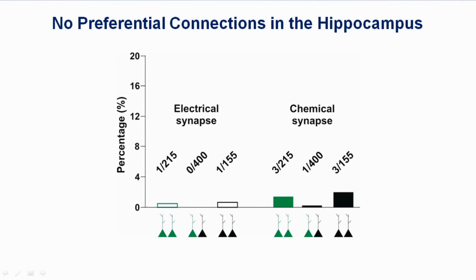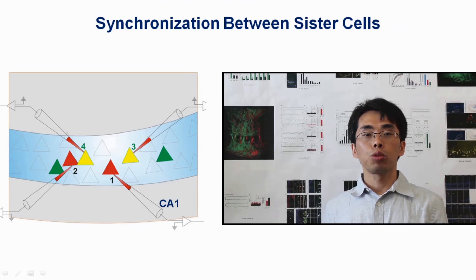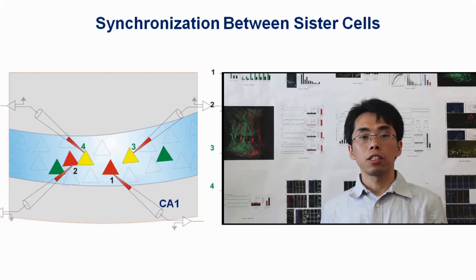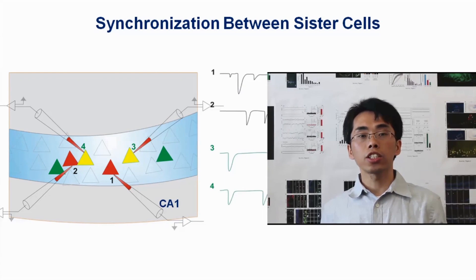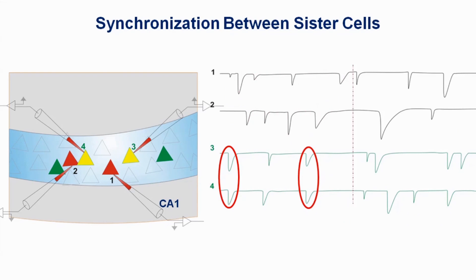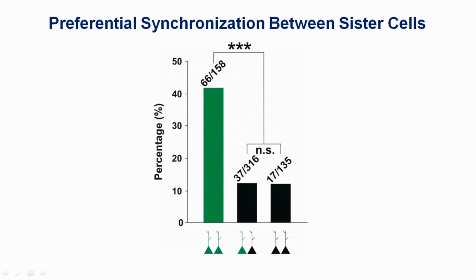However, interestingly, while sister pyramidal cells in CA1 do not preferentially develop synapses with each other, we found that they exhibit synchronized spontaneous activity, and this synchronicity is quite specific between sister cells. Furthermore, we identified that these synchronized events are mediated by synaptic GABA-A receptors.